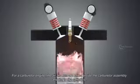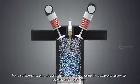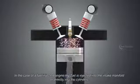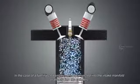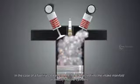For a carburetor engine, the air and fuel are mixed inside the carburetor assembly and fed to the cylinders. In the case of a fuel injected engine, the fuel is injected into the intake manifold or directly into the cylinders.